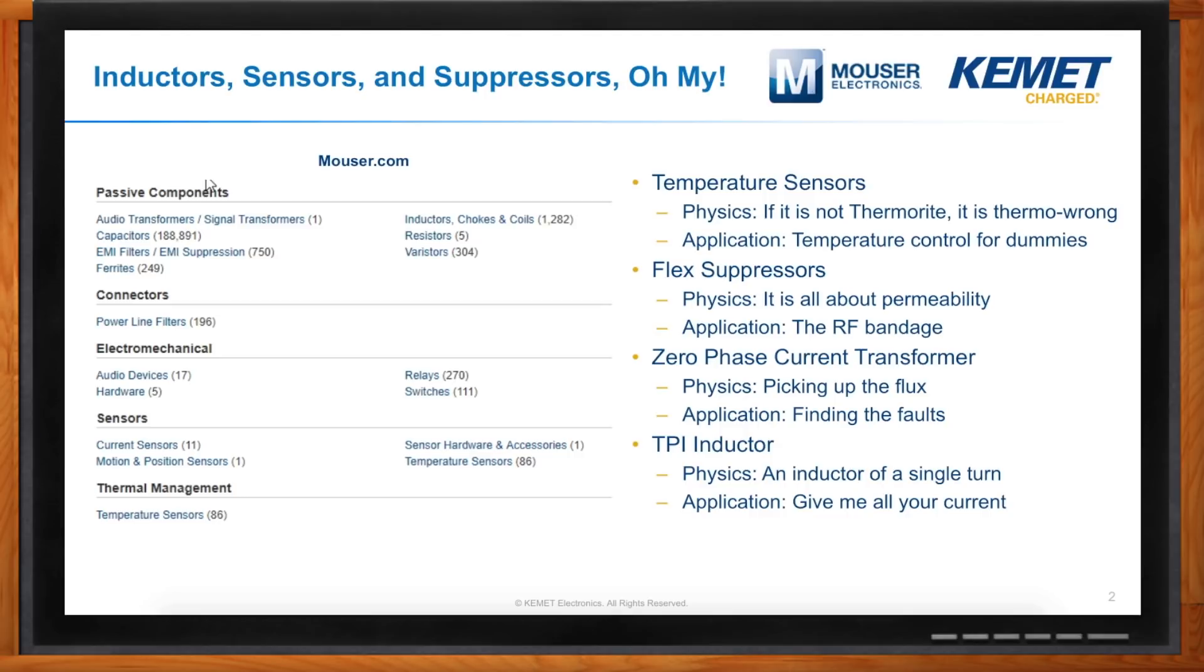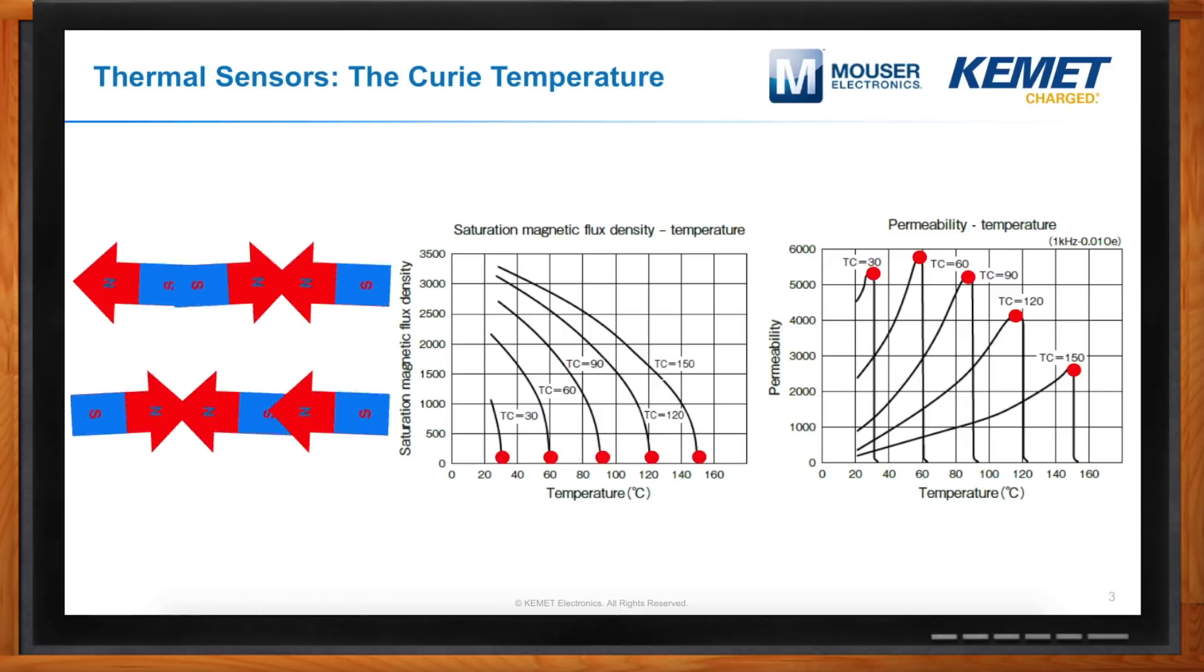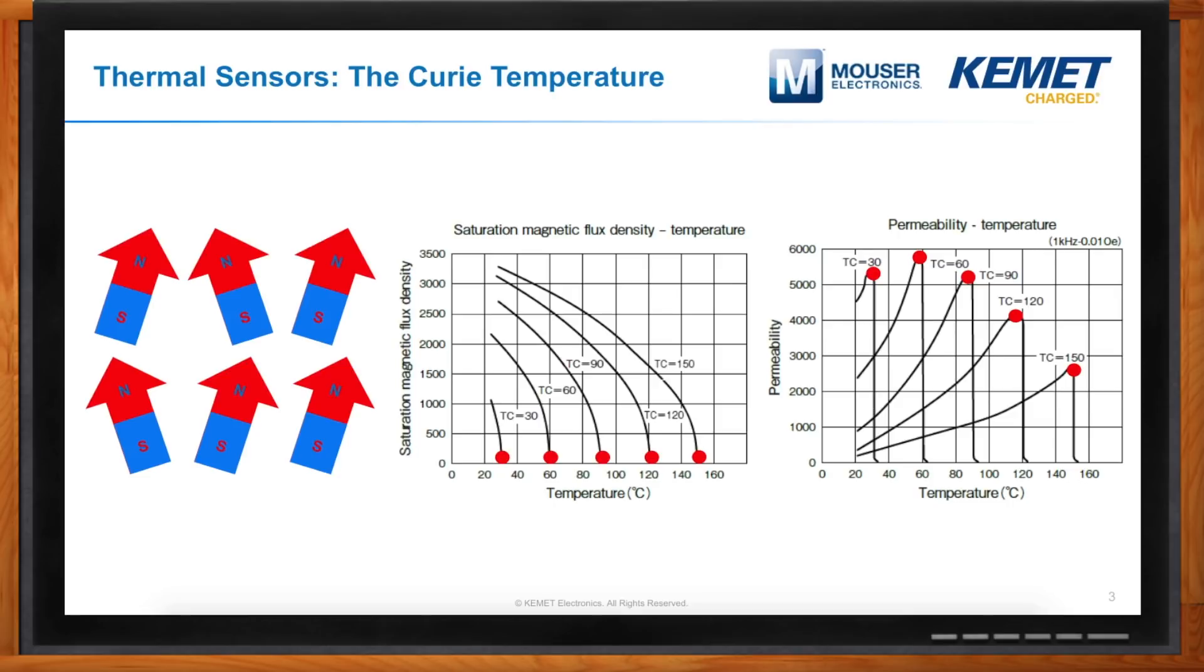All right. So, thermal sensors. Let's talk about the Curie temperature. If you have a magnetic material, all of the magnetic domains are lined up in the same direction. That's what gives it its magnetic properties. As the Curie point is approached, those domains start to destabilize a little bit. And then once you get past that Curie point, then the alignment appears to be random and the material is no longer magnetic. We've developed a material called thermorite, where that Curie point can be very tightly controlled.